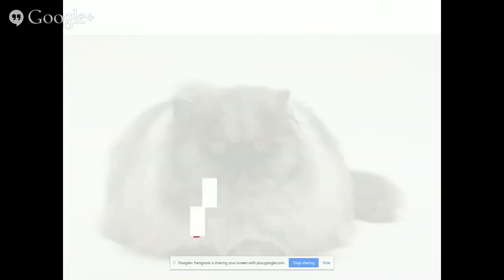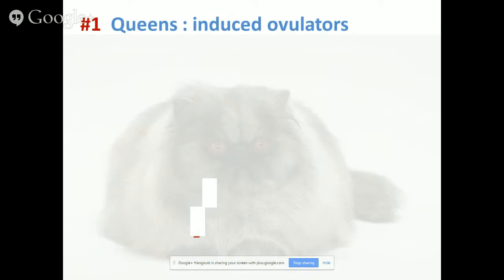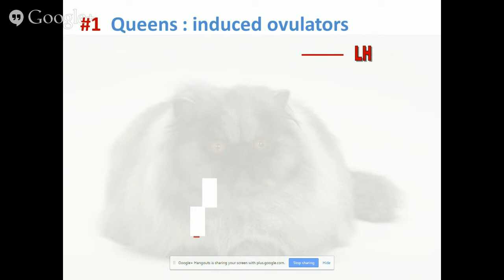The first thing we need to focus on is the fact that queens are induced ovulators. When you breed cats, you know they get into season on a regular basis, but if they are not bred, they typically do not ovulate — and if they don't ovulate, they will not be pregnant. Ovulation means release of the oocytes — the eggs — inside the genital tract, where they will be fertilized by spermatozoa. Queens are induced ovulators and ovulation is induced by mating. Let's take a look at the hormonal mechanism behind ovulation in queens.